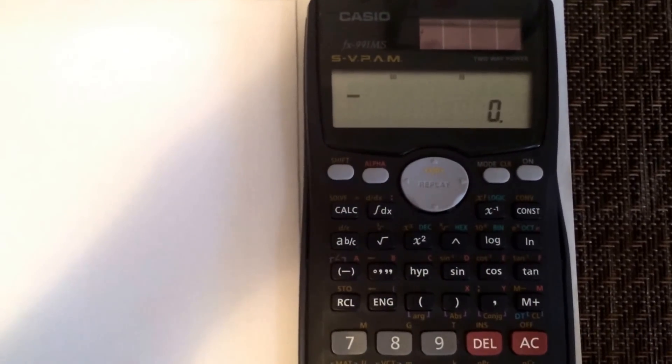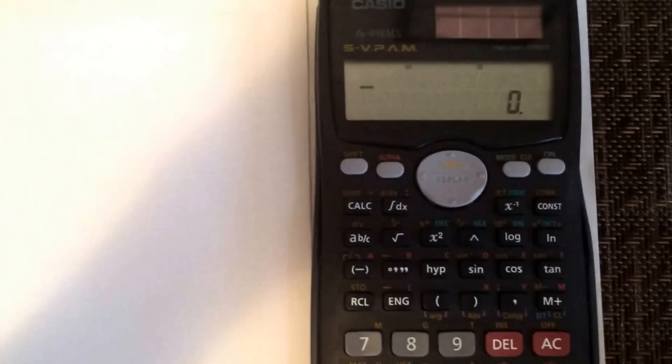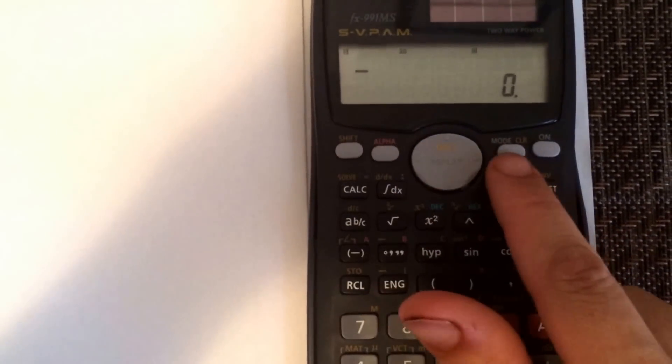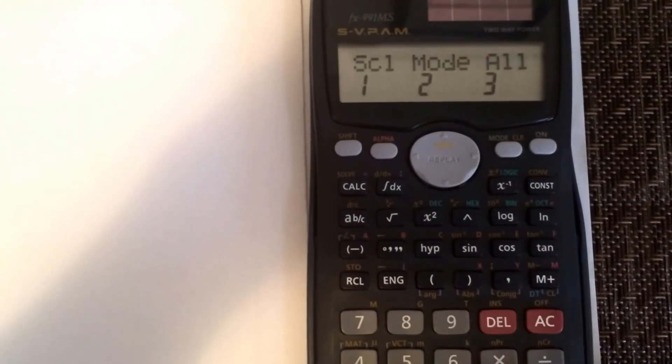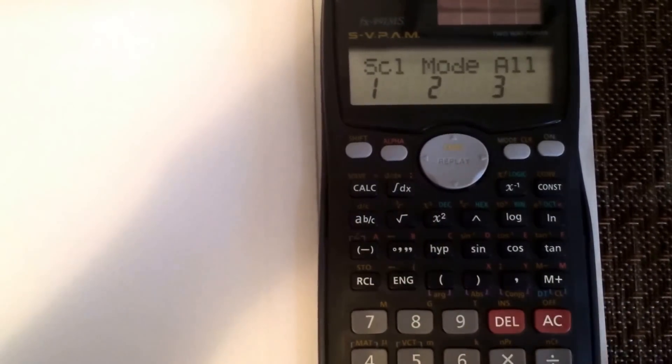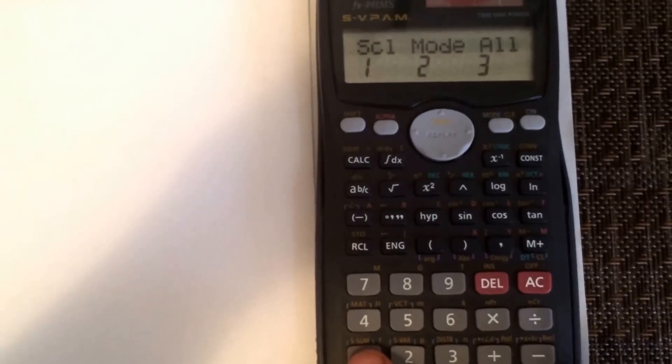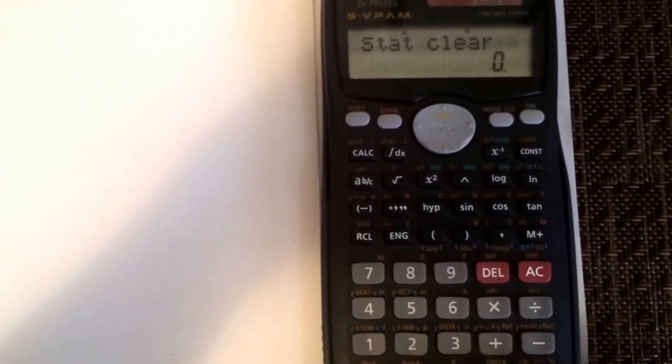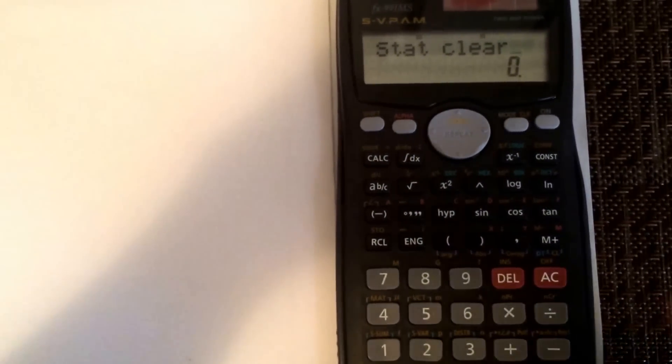Now any data you've entered or someone else has entered is always stored, so we want to clear that. Go to shift clear, which is beside the mode or right on the mode button, and then one. You'll see that tells you that's been cleared.